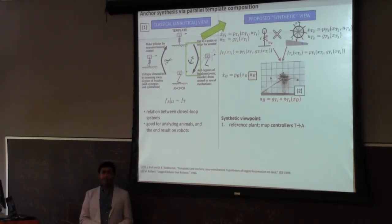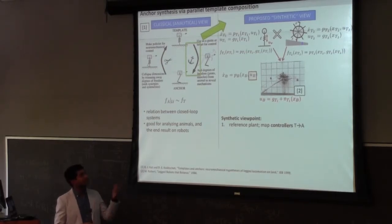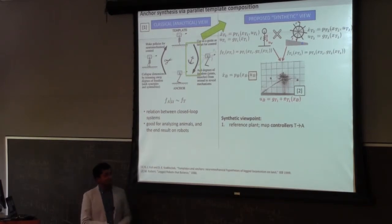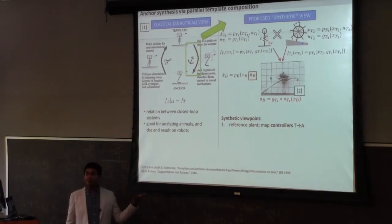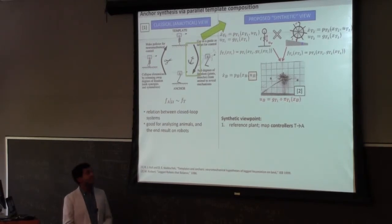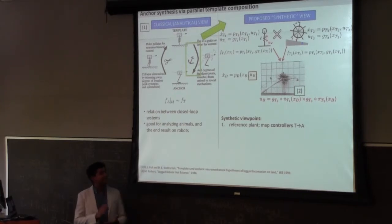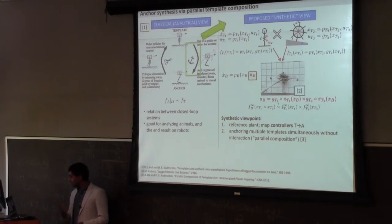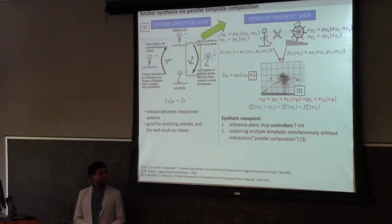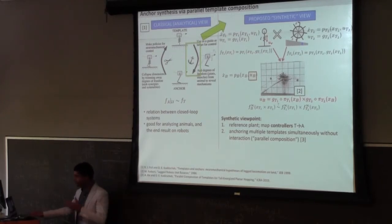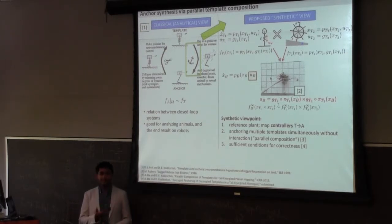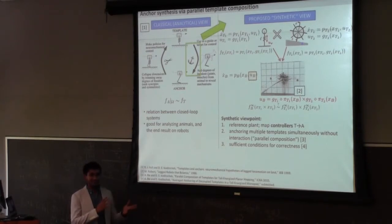The second thing we want is to embed multiple templates in the same anchor. A robot that can hop up and down but also go sideways — the sideways hopping corresponds to a rolling rimless wheel template, which has the same property of settling to a constant speed. Ideally we'd apply the rimless wheel controller together with the vertical hopper controller in decoupled ways, and the behavior would be the cross product of both templates. This is what I'm calling parallel composition, and we want to find sufficient conditions under which this works.